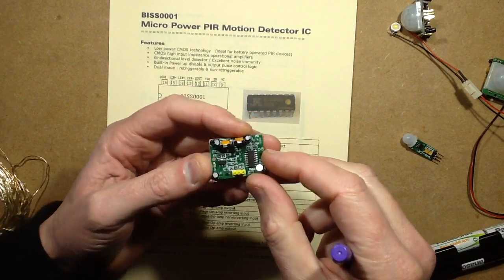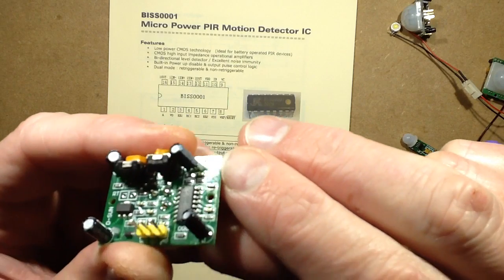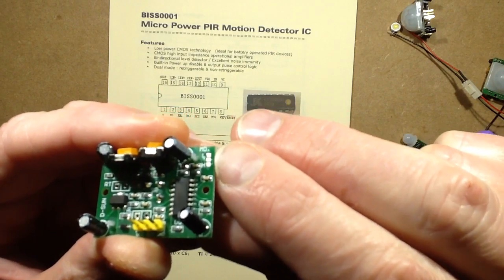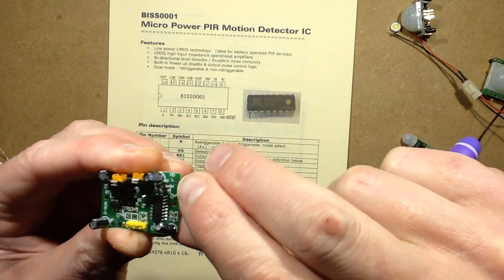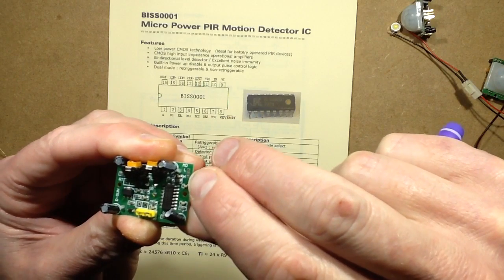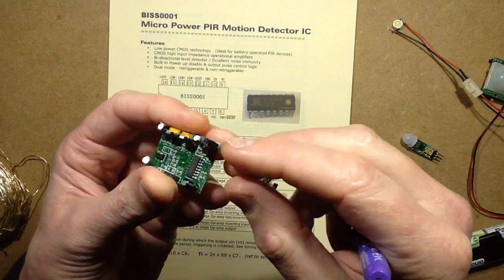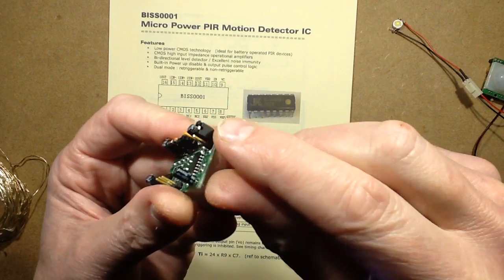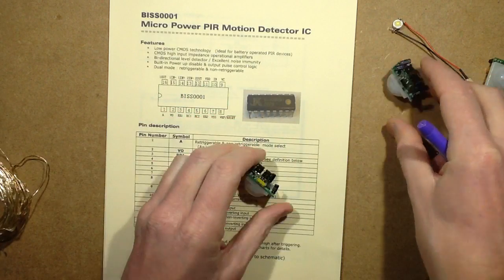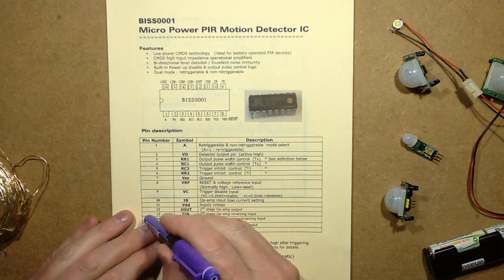Some of these also have little pads that you can link across. They're pre-linked and marked low and high. In this case the middle pad is linked to high. On these ones you actually have a physical link you can change. The point of those is it's going to pin one. It determines if it's what's called re-triggerable or non-re-triggerable.